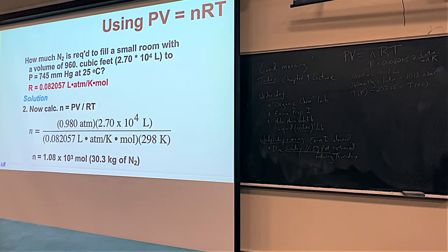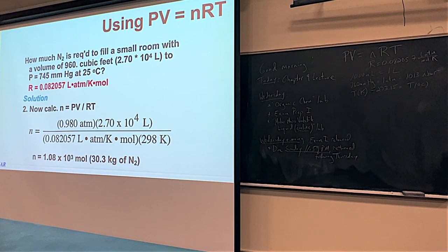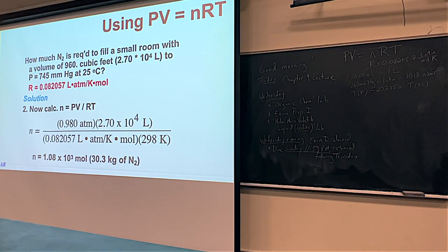If you're talking about this problem to a boss, they probably won't know about moles, but they will understand grams or kilograms. So you take the moles and multiply by the molar mass of N₂ — about 28 grams per mole — to get grams, and divide by 1000 to get kilograms.